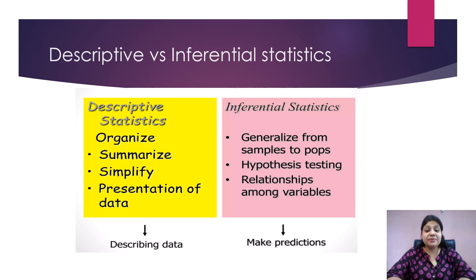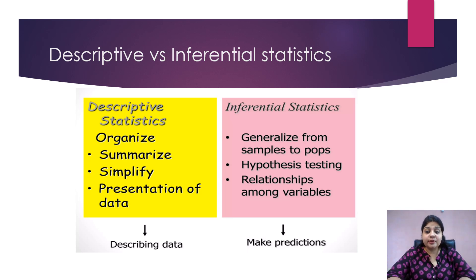Before proceeding with inferential statistics, let's see the basic differences between descriptive and inferential statistics and their purpose. Let's take a simple example: I have a hundred students in a class and I want to find out the average marks of the class. I will sum up all the marks of a hundred students and divide by the number of students — this is how we find the mean. Now let's say I'm calculating the marks of Class 3 students, which has five sections: A, B, C, D, and E, and I know that Class A's average mark is 90.